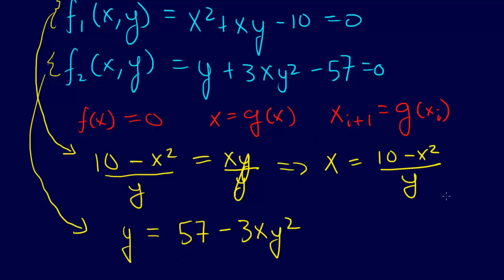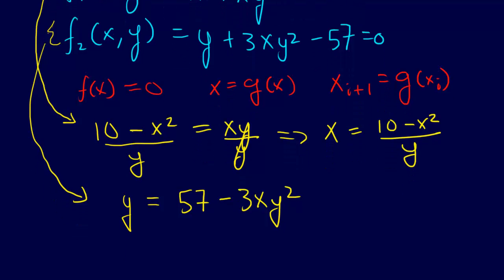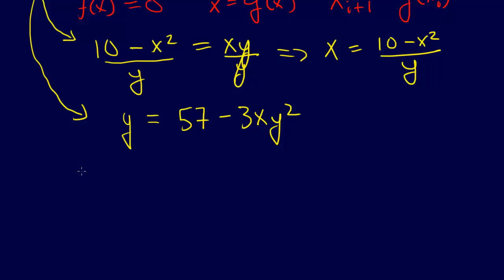Okay, so now I've got it. So applying the iteration, let's write it out in general. xi plus 1 equals 10 minus xi squared over yi. And then yi plus 1 equals 57 minus 3xy squared. Perfect.